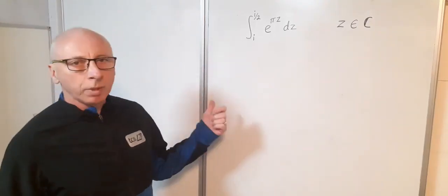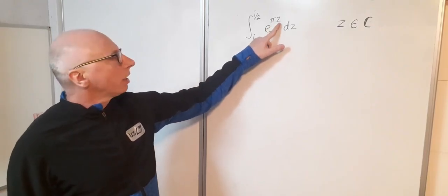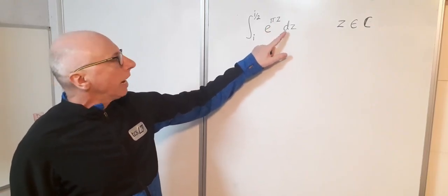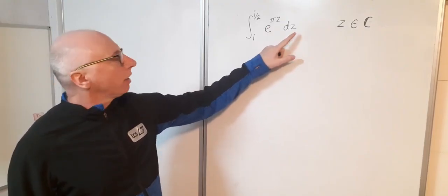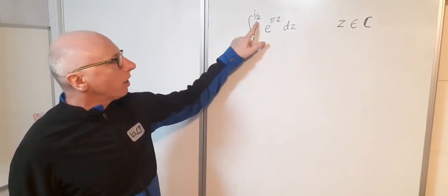In this question here I've got a complex integral, e to the pi z to be integrated. That's my integrand and I'm going to integrate with respect to z, and my ranges and parameters of integration are i to i over 2.